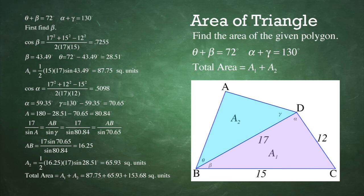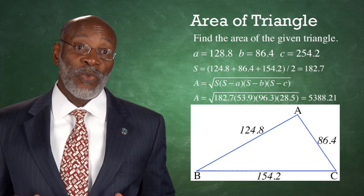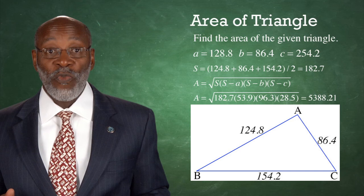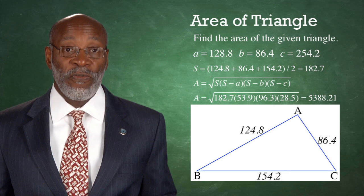Find the area of the triangle given the following three sides: side A, 128.8; side B, 86.4; side C, 254.2. S is equal to 124.8 plus 86.4 plus 154.2, all divided by 2, equals 182.7.